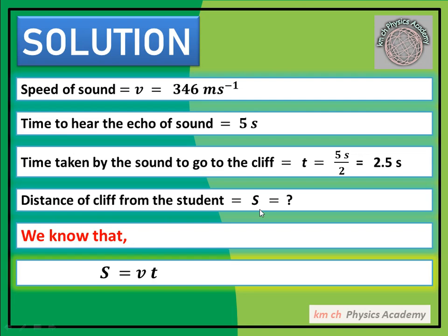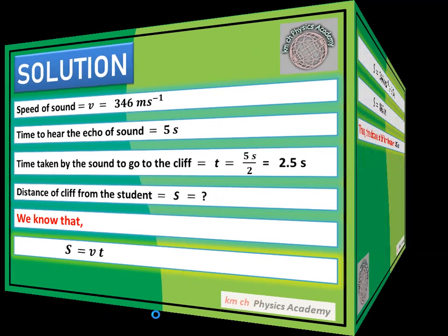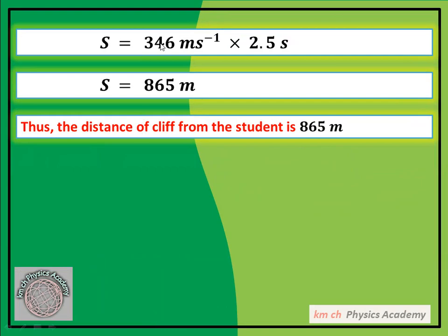Distance of cliff from the student, we'll take as s. This we have to find. We know that s = vt. We have v and we have t, so distance will be calculated. s = 346 meter per second into 2.5 second. The s power minus 1 and s power 1 cancel, leaving only meter as the unit. 346 multiplied by 2.5 gives 865. Thus the distance of cliff from the student is 865 meter.